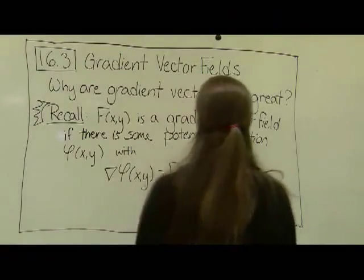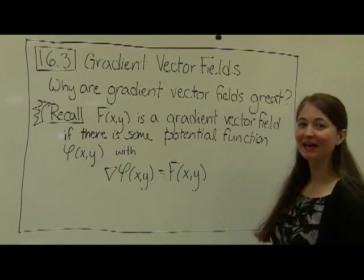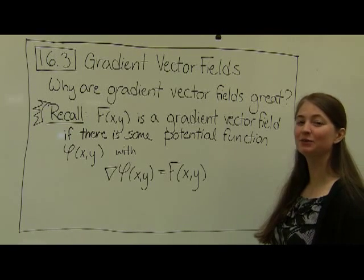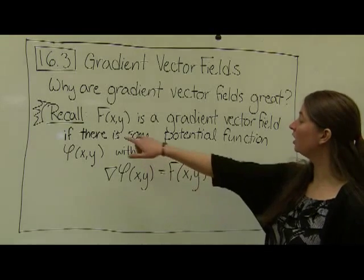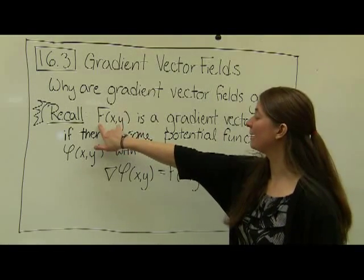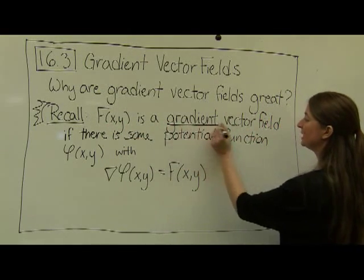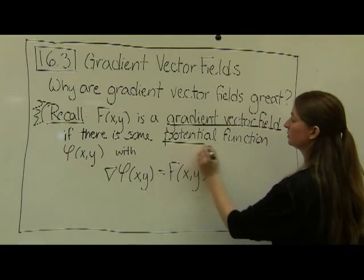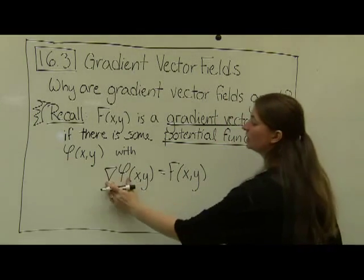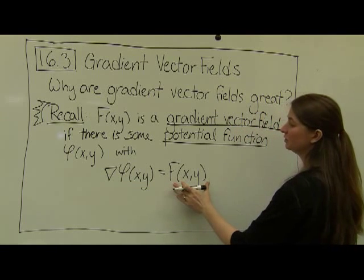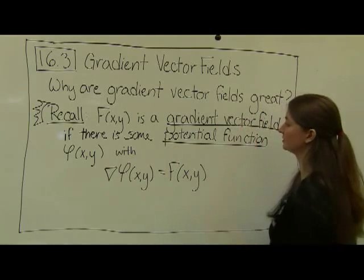The first question we're asking ourselves today is: why are gradient vector fields great? To answer that question, I'm going to recall a couple of facts from the previous videos. Recall, we say that F(x,y) is a gradient vector field if there's some potential function — usually written with a phi, φ(x,y) — such that the gradient of phi is equal to our gradient vector field F. That's where the name gradient comes from.